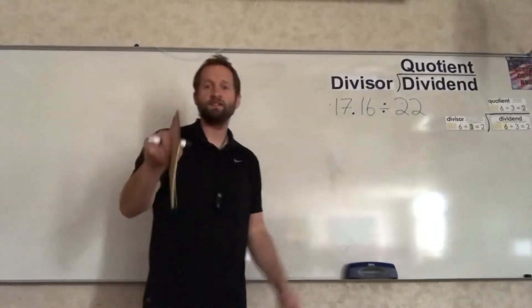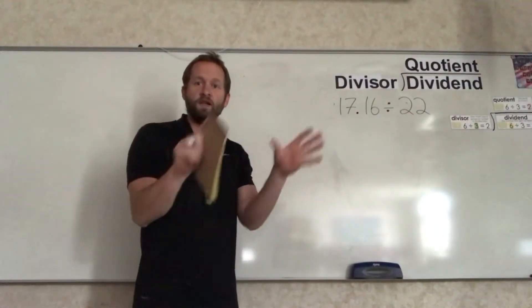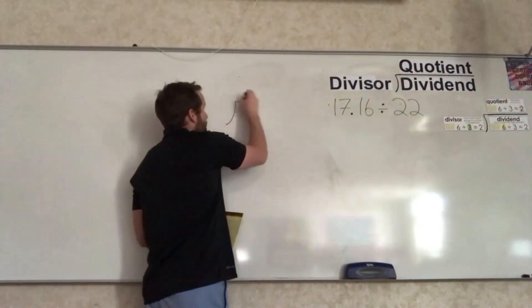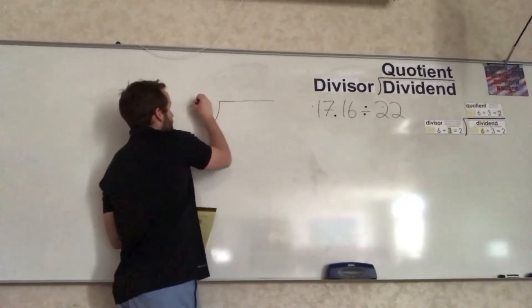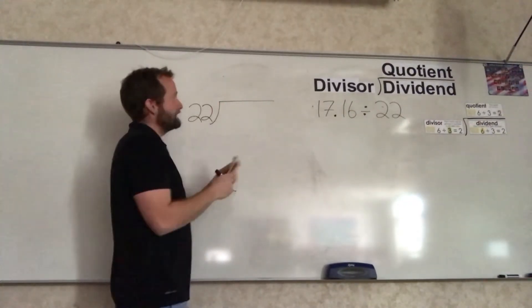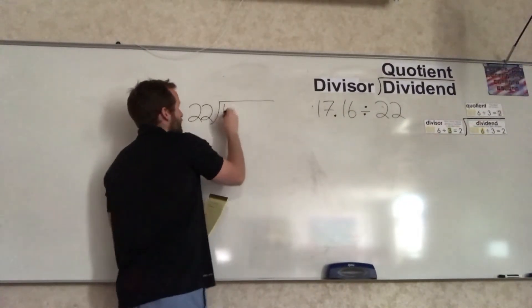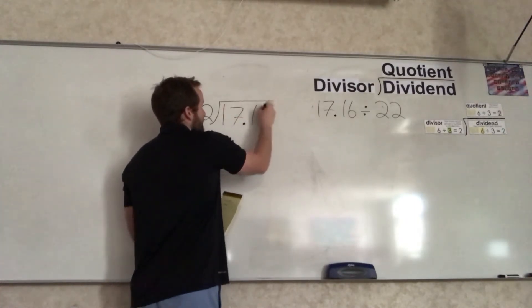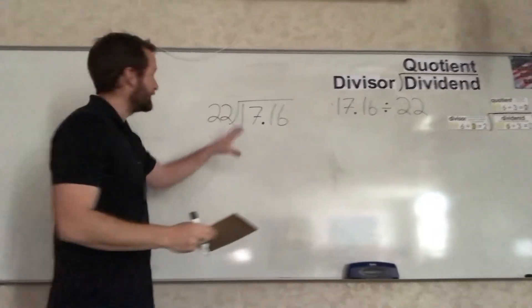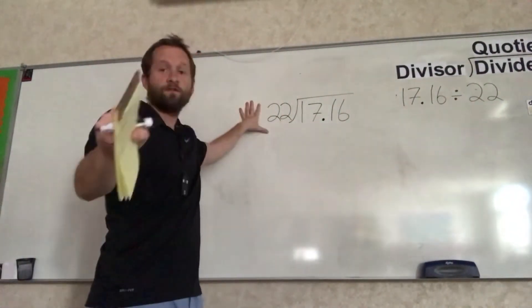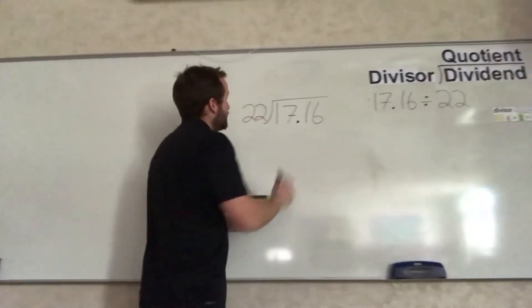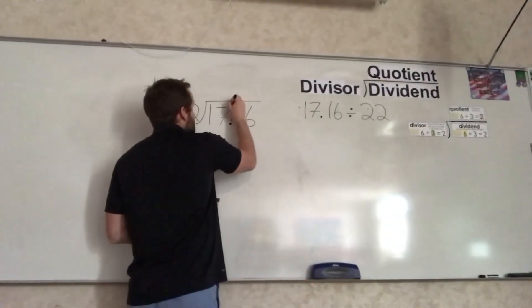I want you guys to take a minute, pause the video, and set up your problem. Now that you've done that, let me set mine up as well. Our divisor is 22, once again on the outside. The dividend is 17.16 right there inside our division bracket. The very first thing we're going to do, remember, before we do any division, take that decimal and move it straight up into the quotient. Always do that first. It keeps track of the place value for us.